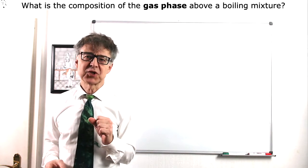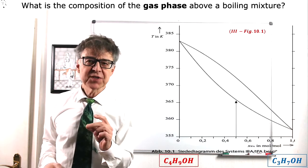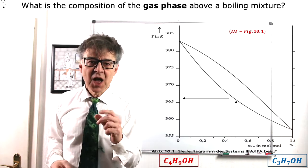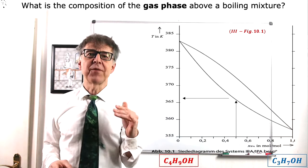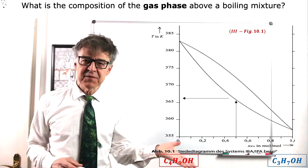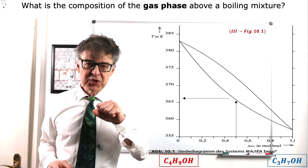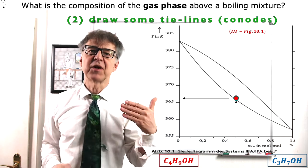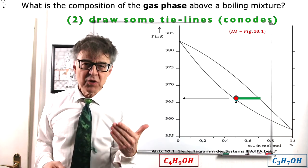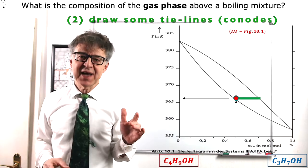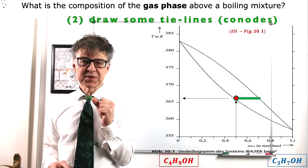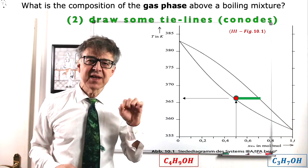Back to the liquid 50-50 mixture. This mixture starts to boil at 365 K. Now what's the composition of the vapors, the gas phase above this boiling mixture? Well, here we have to ask the tie line or the connode. A tie line or connode is a straight line in the two-phase region of a phase diagram which connects the compositions of the phases at equilibrium.